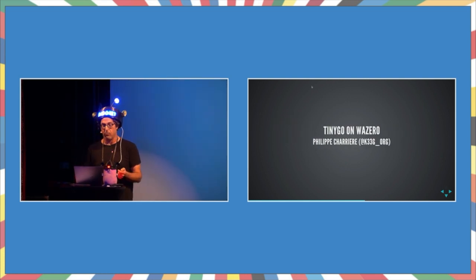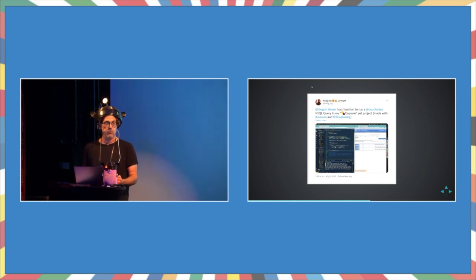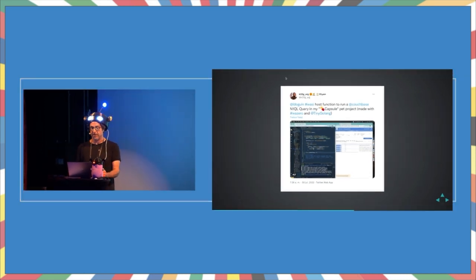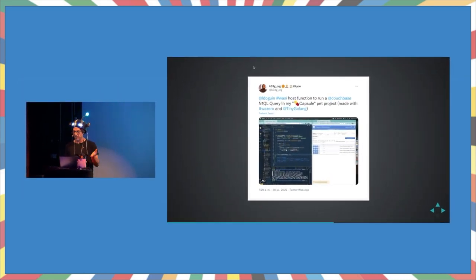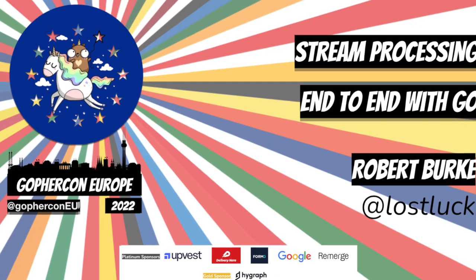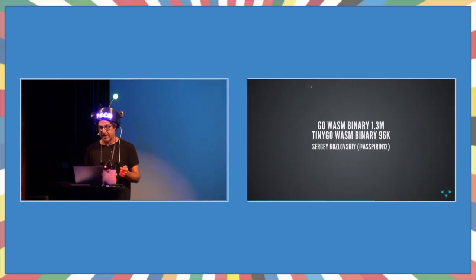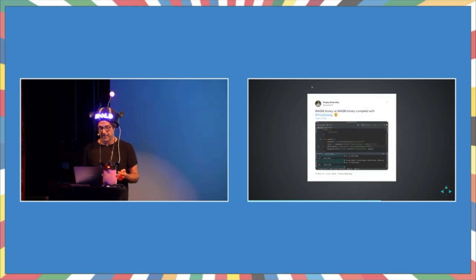Speaking of TinyGo on Wazero, Philippe Charrier, a fantastic programmer out of France, is doing all sorts of interesting things. He was recently doing experiments running Wazero with TinyGo and using it to query a CouchDB database, and apparently it's working now. Also on binary size: a regular Go Wasm binary is 1.8 megabytes; a TinyGo Wasm binary is 96K. Sergey Kalivsky thought that was pretty amazing — yeah, size matters, and small is the new big.